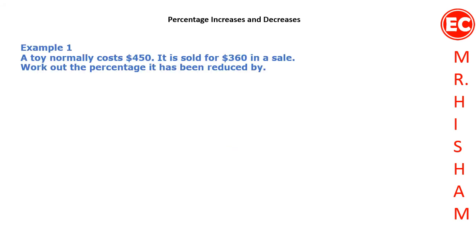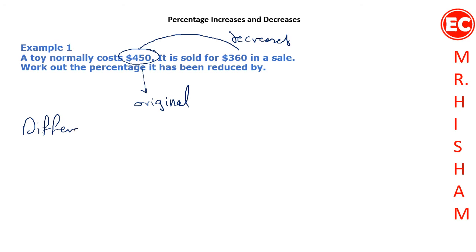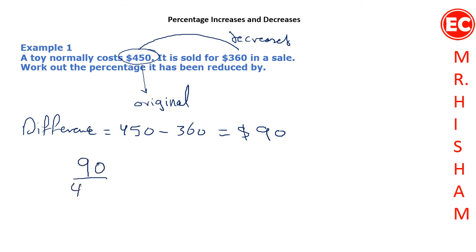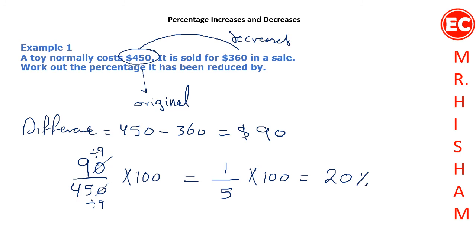Example 1: A toy normally costs $450 and is sold for $360. Since the new value is less than the original, this is a decrease. The difference is 450 minus 360, which equals $90. Divide 90 by the original 450 and multiply by 100. Cancelling zeros and simplifying by dividing by 9 gives 1 over 5, and 1 over 5 times 100 equals 20. So the percentage decrease in the toy's price is 20%.